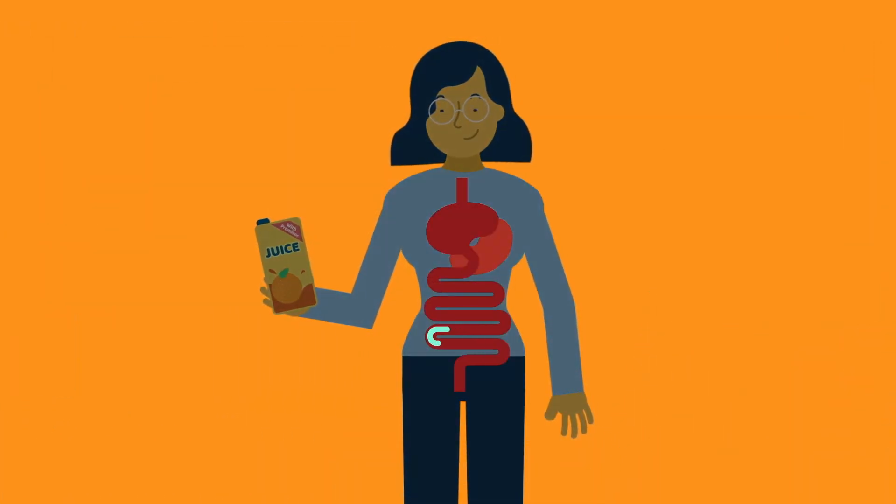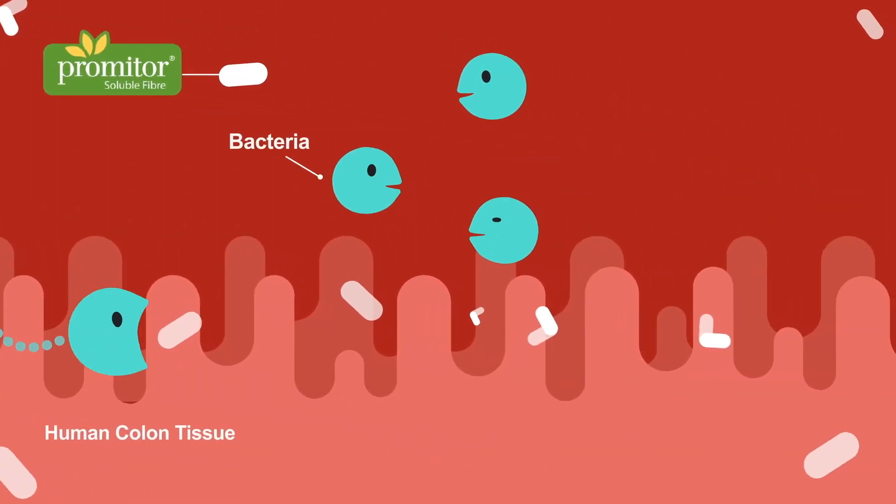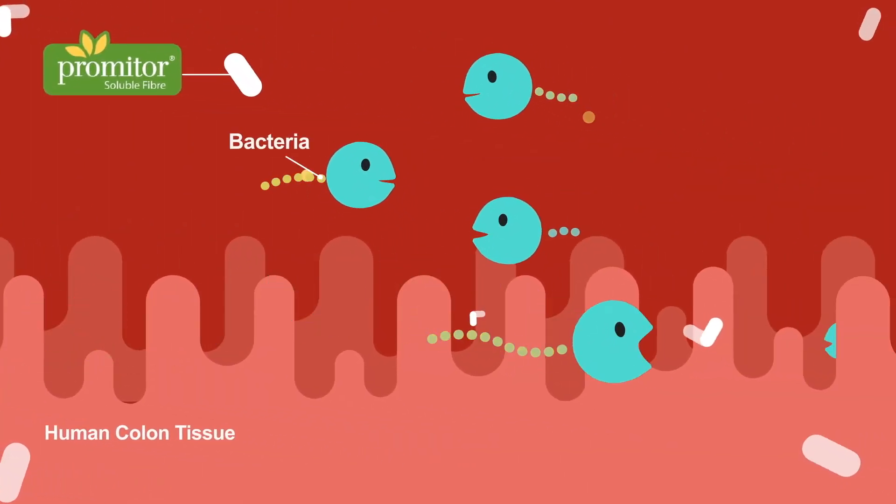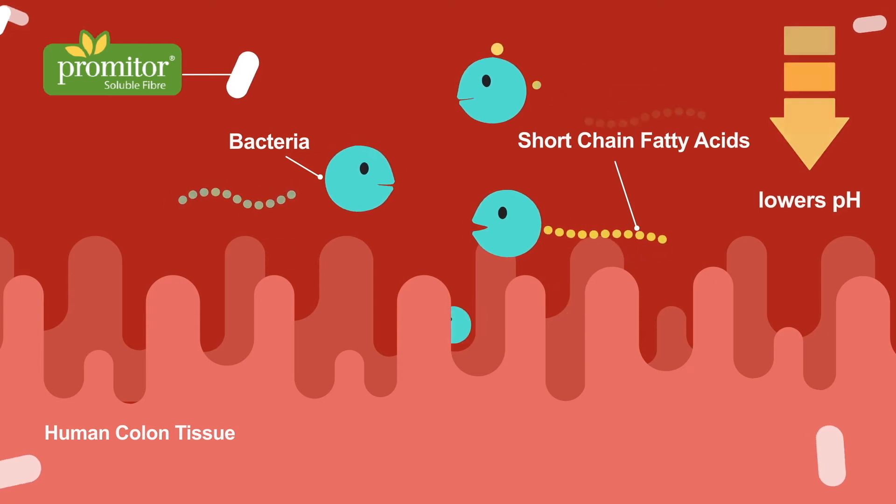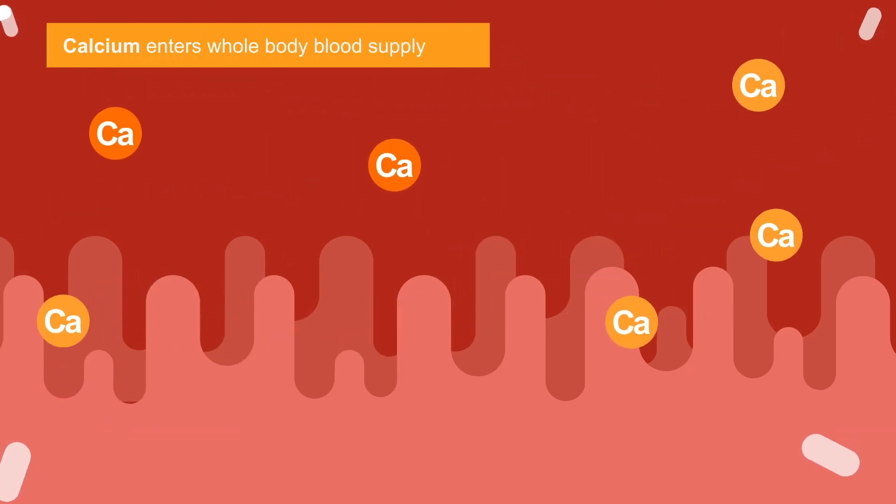Promitor Soluble Fibre feeds beneficial bacteria in the gut and stimulates their growth and activity, which is called prebiotic effect. The activity of these beneficial bacteria promotes positive effects in the gut, such as increasing calcium absorption.